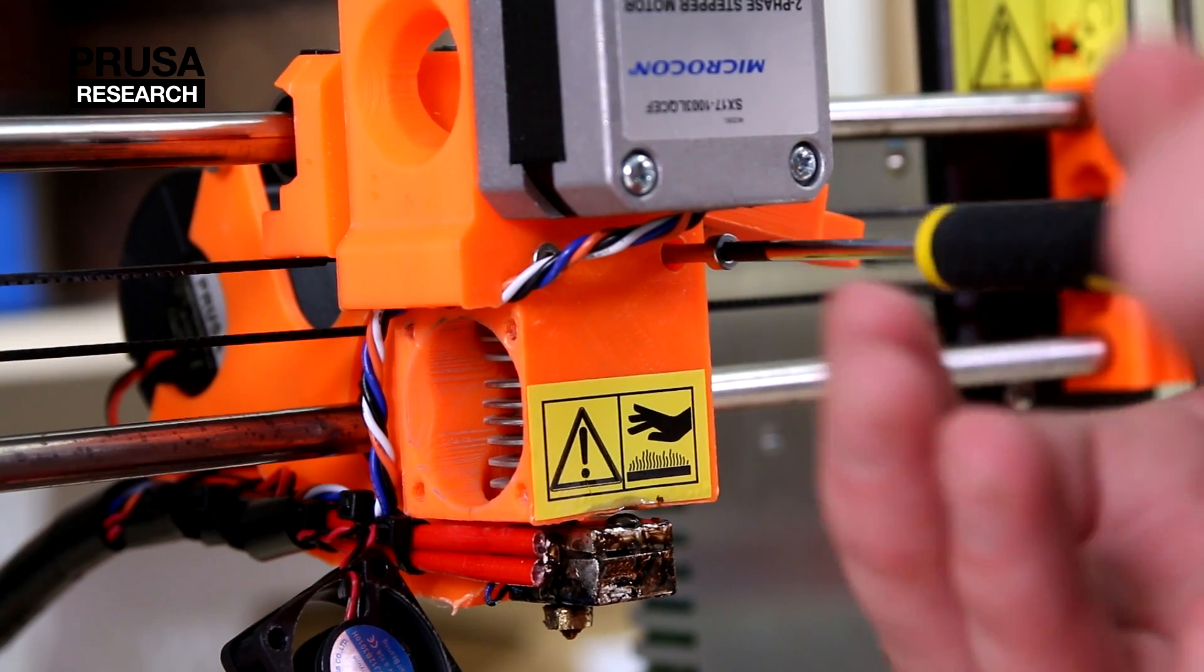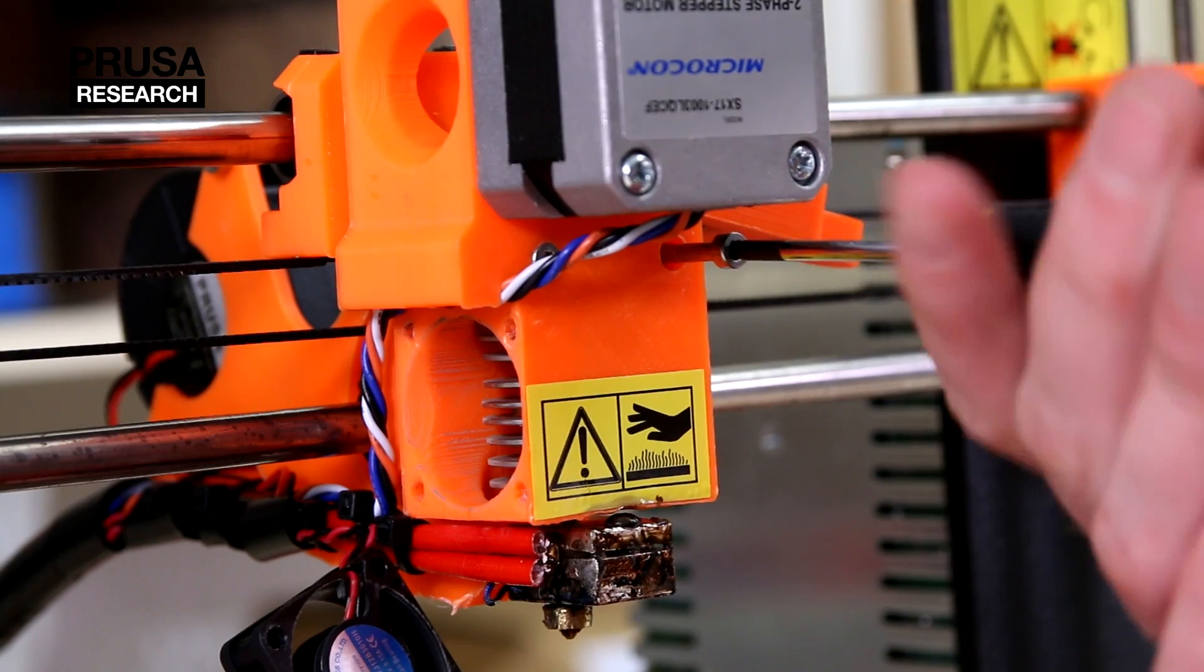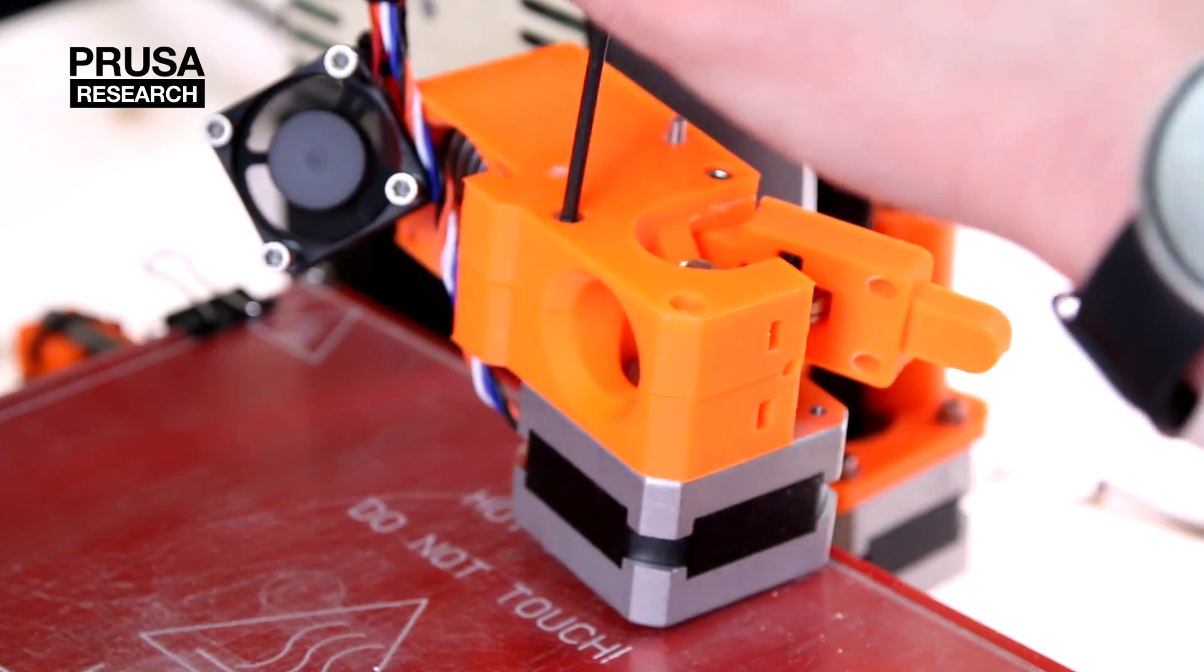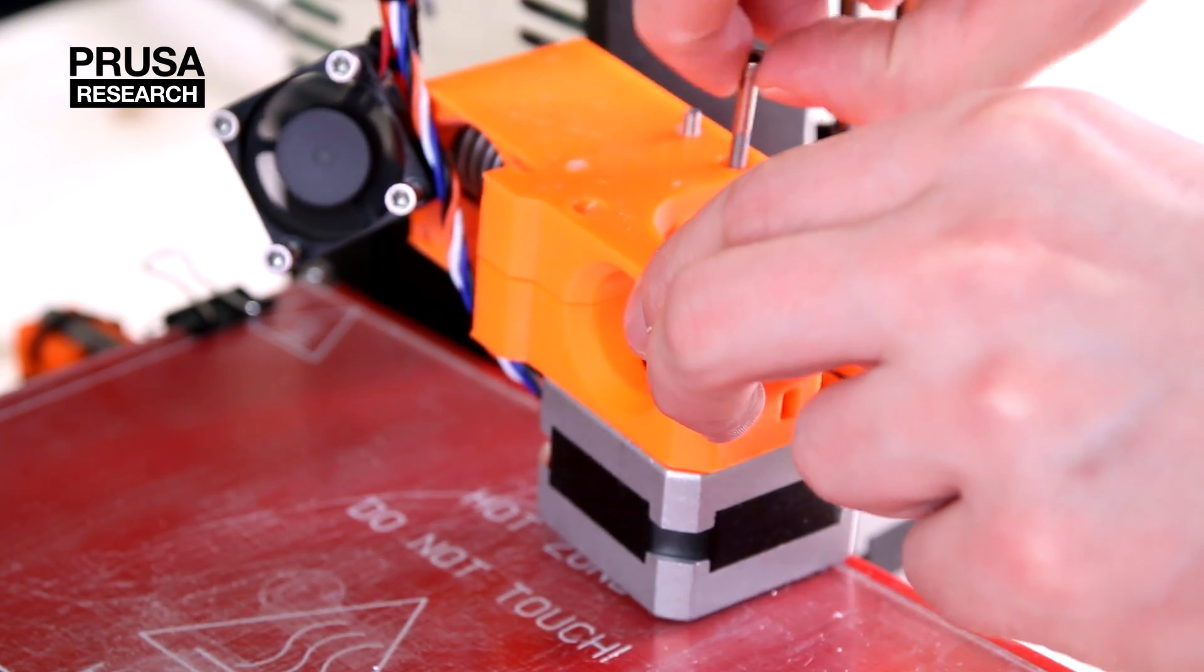We remove the two front screws which are holding the extruder together, and at last screws that are holding the motor.